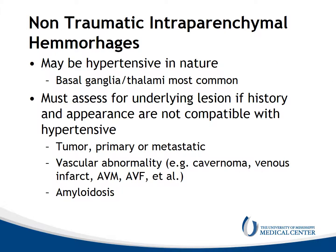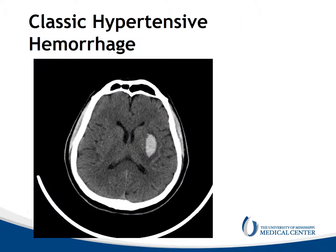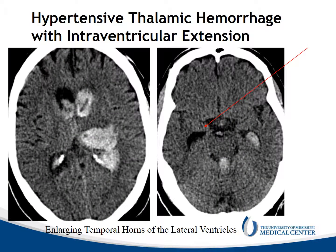Non-traumatic intraparenchymal hemorrhages also occur. These may be hypertensive in nature; the basal ganglia and thalami are most commonly involved. One must assess for underlying lesions if the appearance is not characteristic of a hypertensive type hemorrhage — in that case you'd be looking for tumors, vascular abnormalities, or underlying diseases like amyloidosis. An MRI or CTA would likely be used. This is a classic hypertensive hemorrhage located in the left basal ganglia with surrounding edema. Here's another hypertensive type hemorrhage in the thalamus with intraventricular extension, and we can see the temporal horns are enlarging, reflecting developing ventriculomegaly and hydrocephalus.